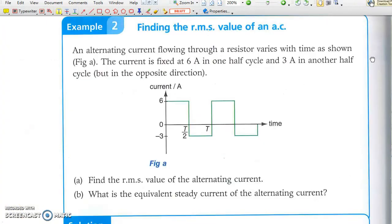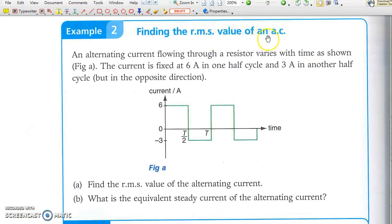Example 2: finding the root mean square value of an AC. In this case, the current has only two values, each lasting for half a period.